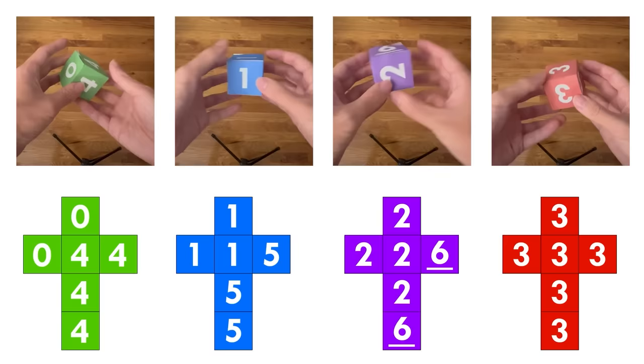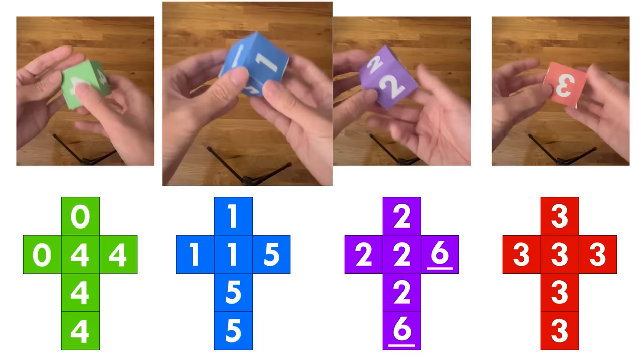Now imagine these four dice. The green die sides have 0, 0, and 4, 4, 4, 4. The blue die sides have 1, 1, 1, and 5, 5, 5.